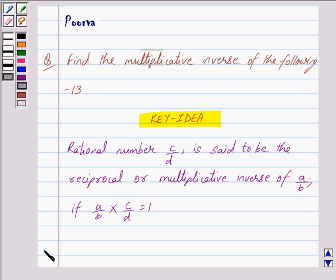Let us begin with the solution now. We have to find the multiplicative inverse of -13, and we know that -13 can also be written as -13/1. Now, by the key idea we can clearly see that this -13/1 is of the form a/b.